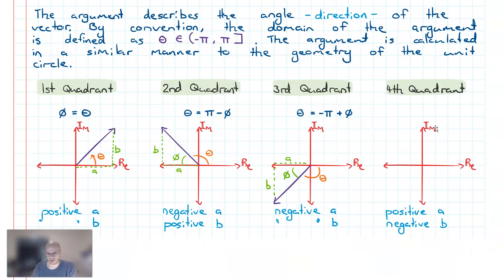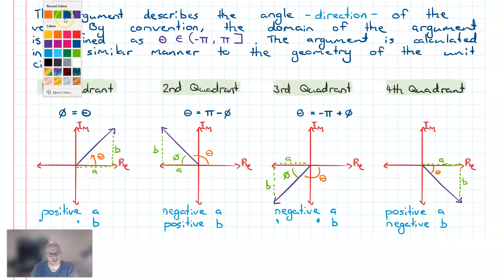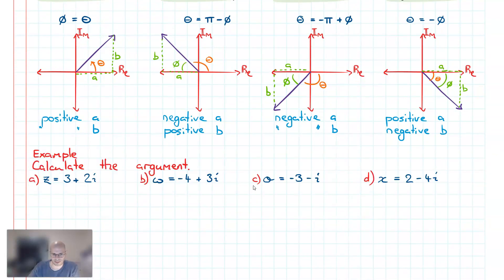Finally, the fourth quadrant — the second simplest case. We have a positive real component and a negative imaginary component. The imaginary component goes downward and the real component goes across. Both theta and phi point in the same direction below the real axis, which implies that theta equals negative phi.